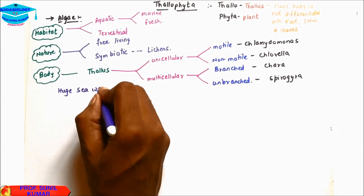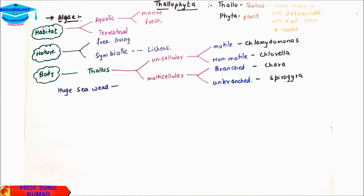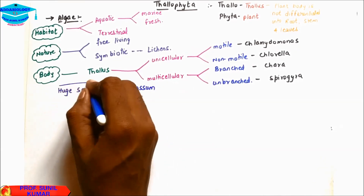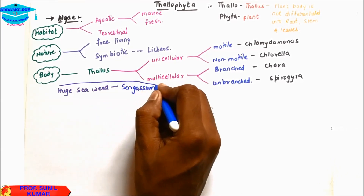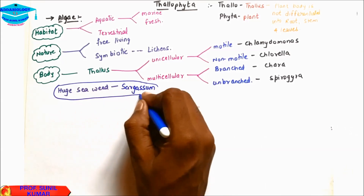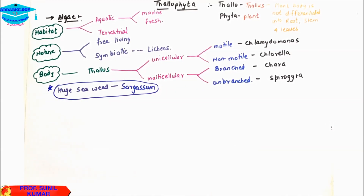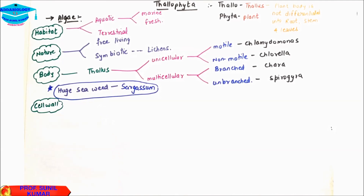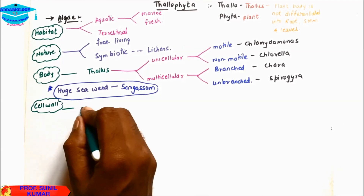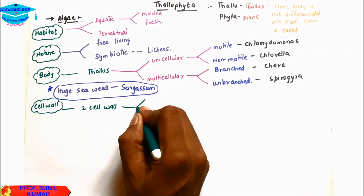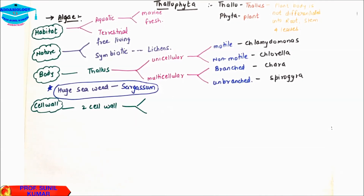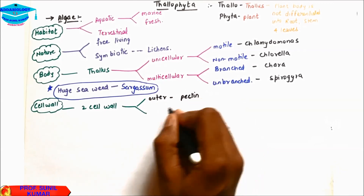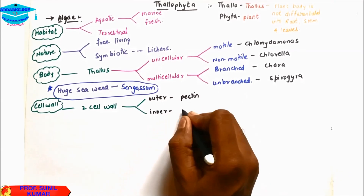One important term: the huge seaweed that we find is Sargassum — it can come as an MCQ. When we talk about the cell wall of algae, it has two cell walls: the outer cell wall and the inner cell wall. The outer cell wall is made up of pectin and the inner cell wall is made up of cellulose.